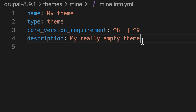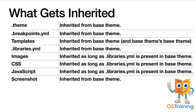Let's talk a little bit about what will get inherited once we make this a sub-theme. You're going to get the .theme file, which holds all of your hooks. The breakpoints.yaml is inherited from the base theme. Any template overrides that are in the base theme will also be in your sub-theme. The libraries.yaml file is inherited. Any images, CSS, and JavaScript are also inherited if the libraries.yaml file is present. And of course, the screenshot is inherited from the base theme.